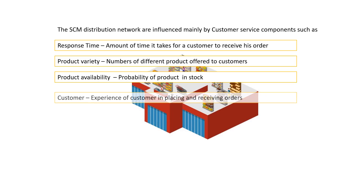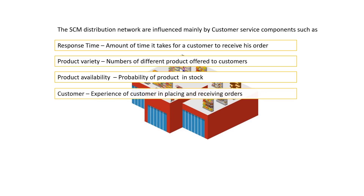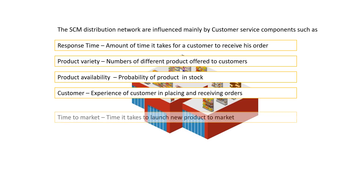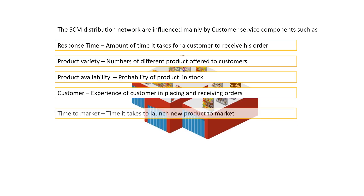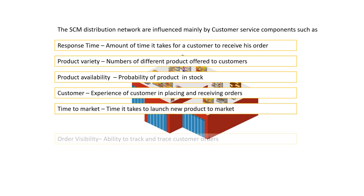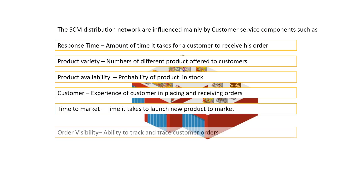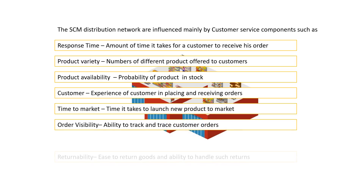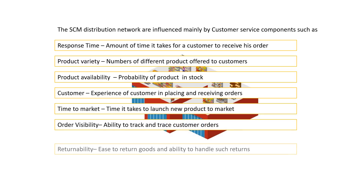Time to market is the time it takes to launch a new product to market. Order visibility is the ability to track and trace customer orders. Returnability is the ability to return goods and handle such returns.